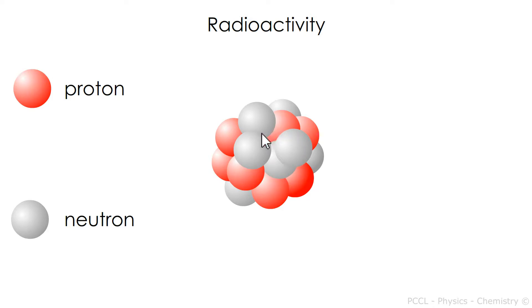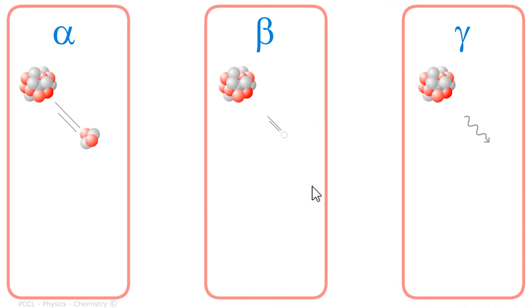If the nucleus has too much matter or energy, it will disintegrate, that is, it will seek to get rid of it. We say he's unstable. In order to seek to become stable, he will relieve himself of what encumbers him.